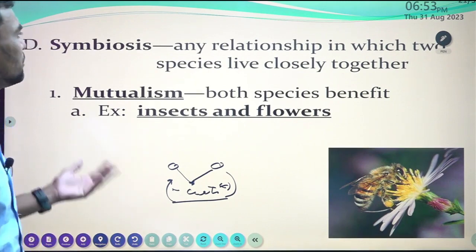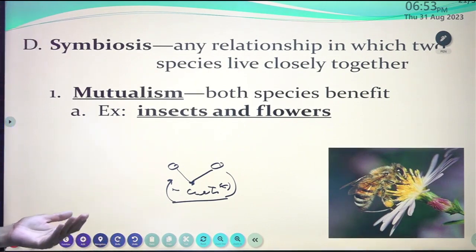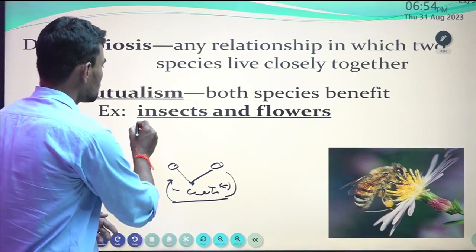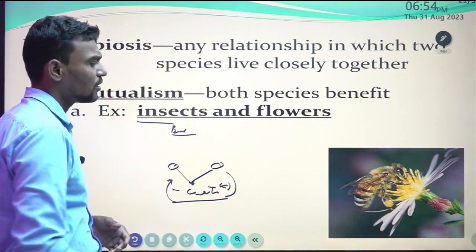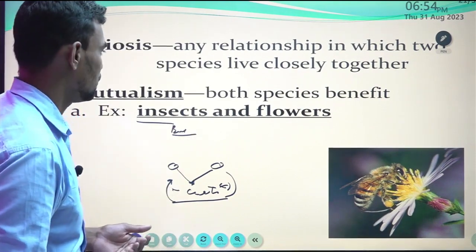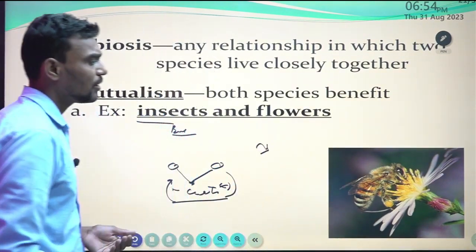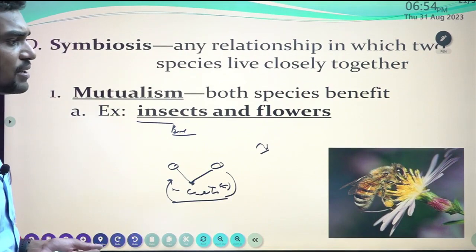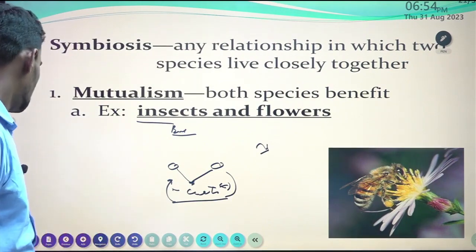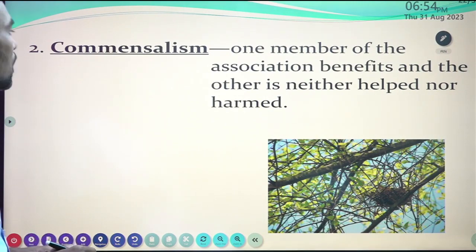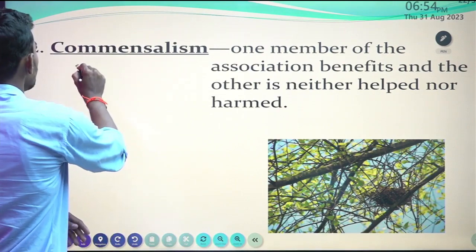Symbiosis is simply any relation in which two species live closely together. Mutualism: both species benefit — for example, insect and flower. A bee serves on the flower to gain nectar but does not harm it, and the flower is not harmed by the bee — this is mutualism. Commensalism: one member of the association benefits and the other is neither helped nor harmed — for example, the nest of a bird on a plant.